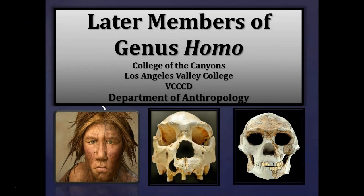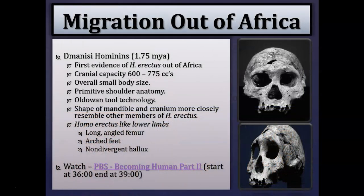This PowerPoint presentation is on the later members of genus Homo, correlating with chapters 11 and 12 in the Explorations textbook and chapters 15 and 16 in the lab manual. With later members of genus Homo — essentially Homo erectus and onward — we're going to see some major changes: migration out of Africa, more sophisticated stone tool technologies, expansion in cranial capacity, and more sophisticated behaviors such as control of fire, persistence hunting, symbolic expression, and language.